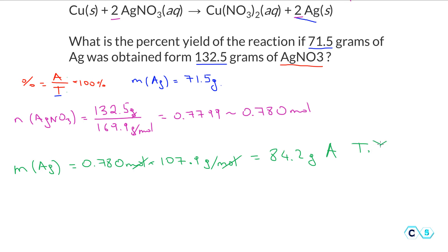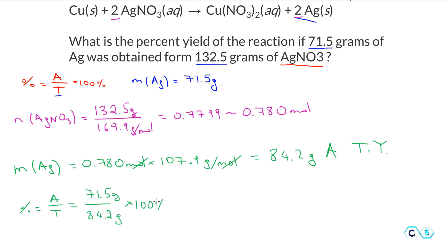This is the theoretical yield — 84.2 grams is how much silver should be produced. The percent yield of the reaction is actual over theoretical: 71.5 grams divided by 84.2 grams, times 100 percent. This gives us 84.9 percent, so about 85 percent is the yield of this reaction.